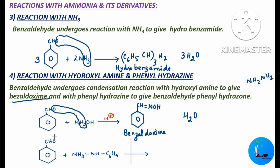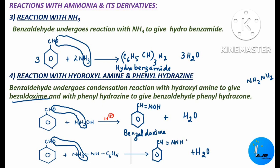The same thing happens: a water molecule is removed — oxygen combines with two hydrogens, and H2O is released. The rest of the product is: C6H5–CH=N–NH–C6H5. The name of this compound is benzaldehyde phenylhydrazone.